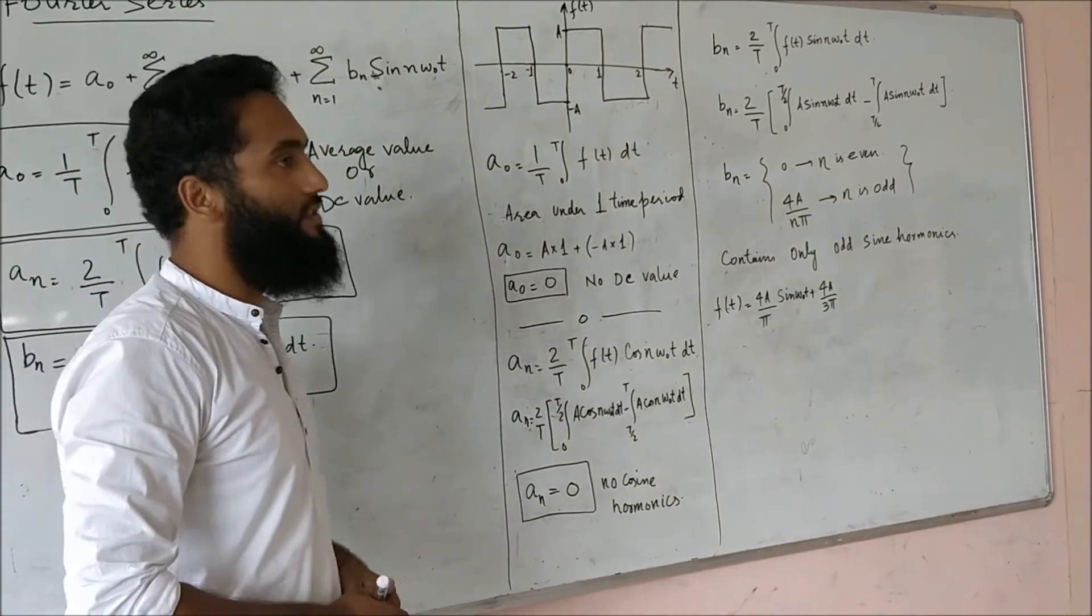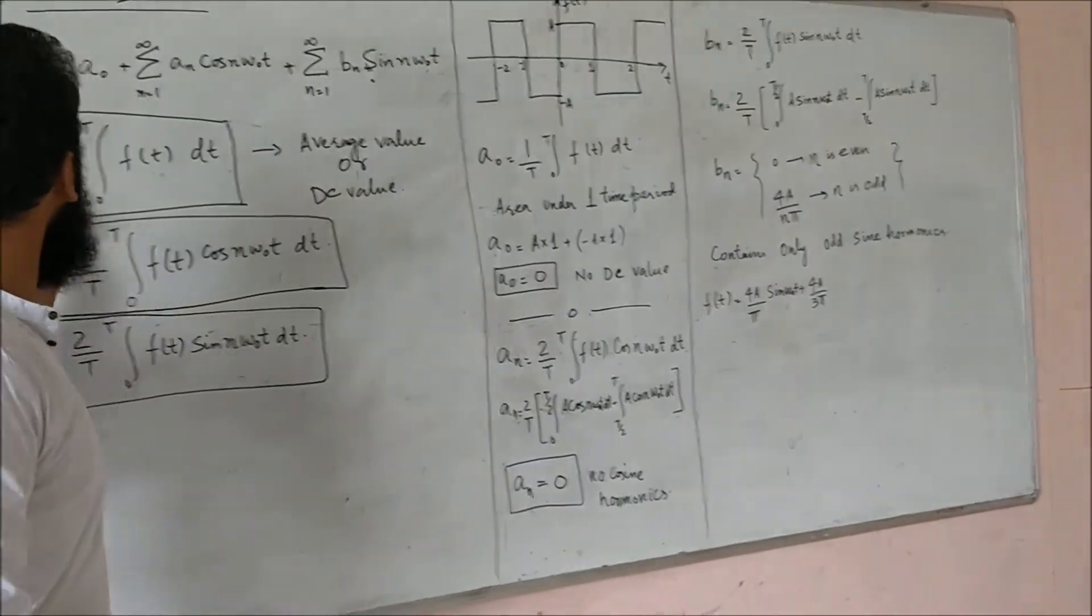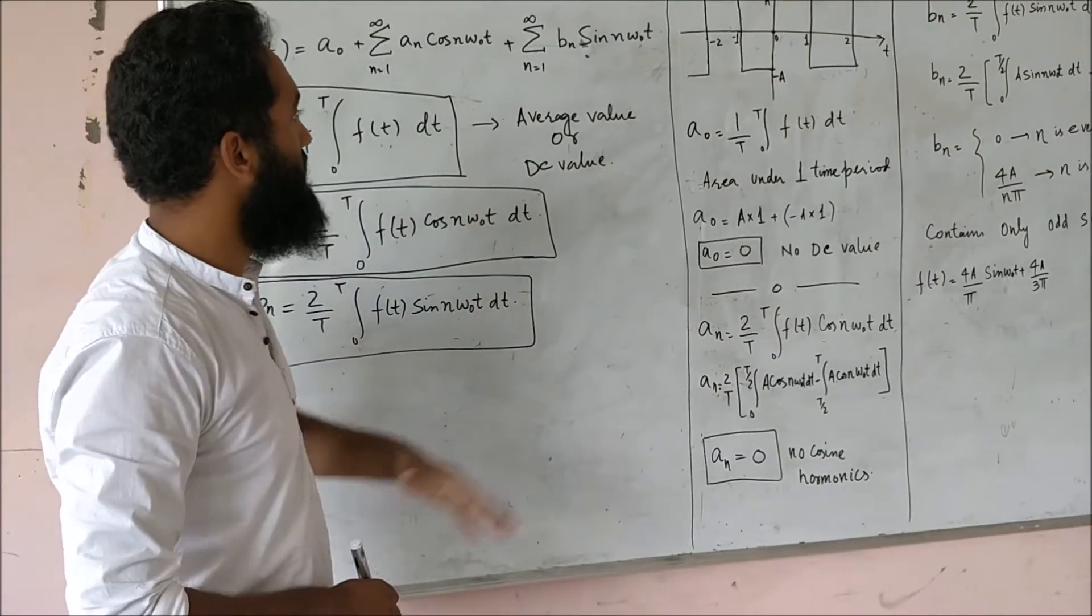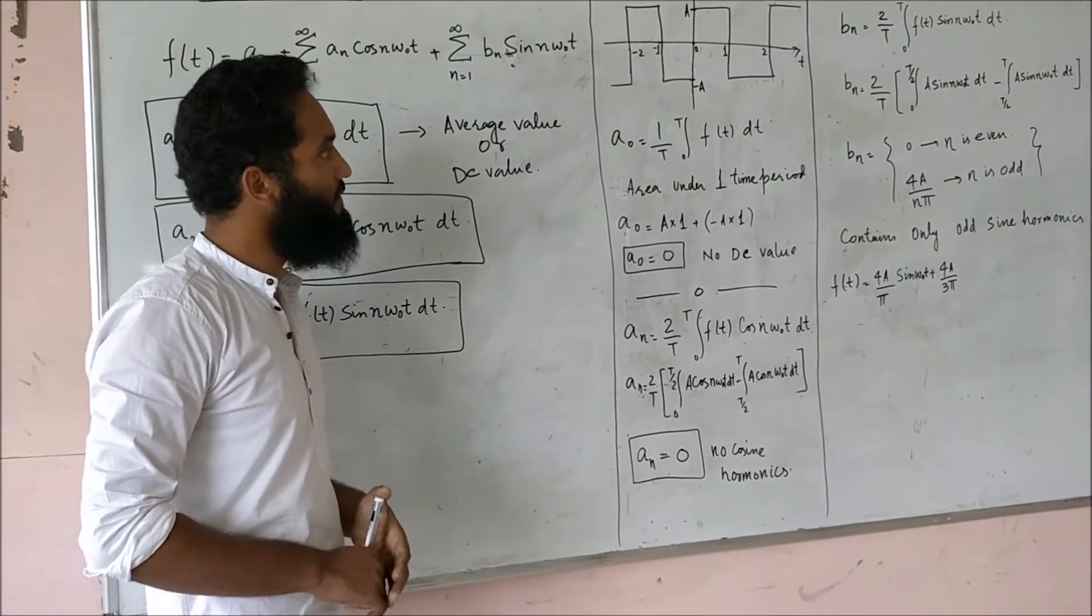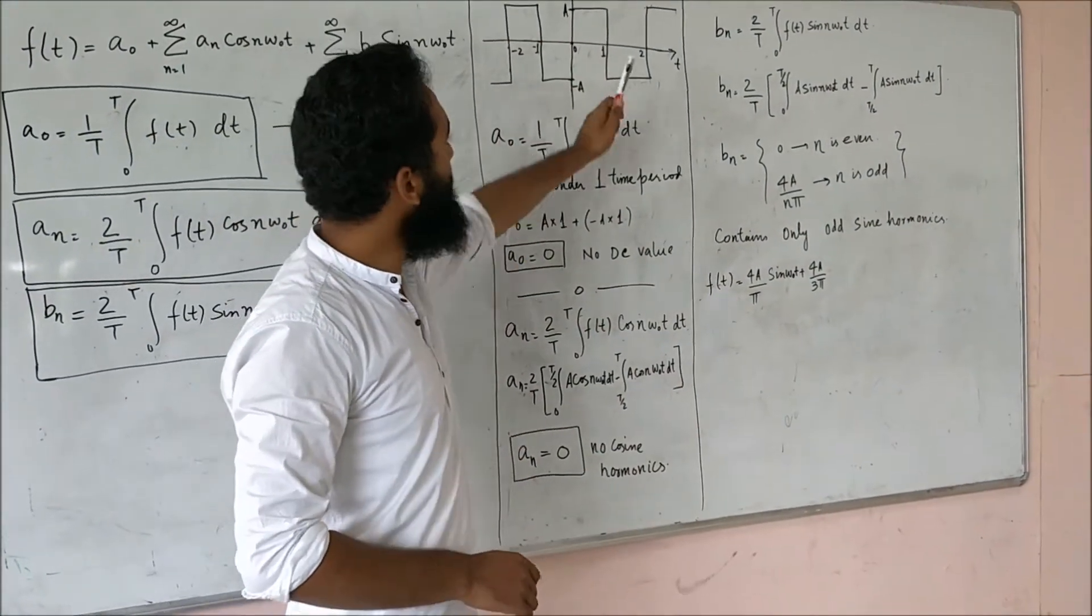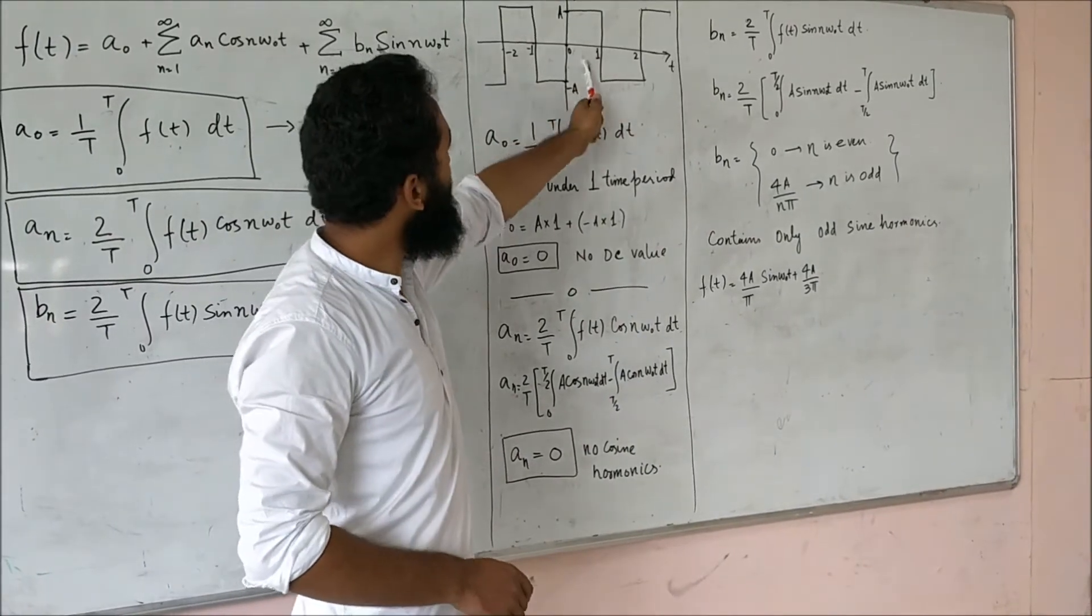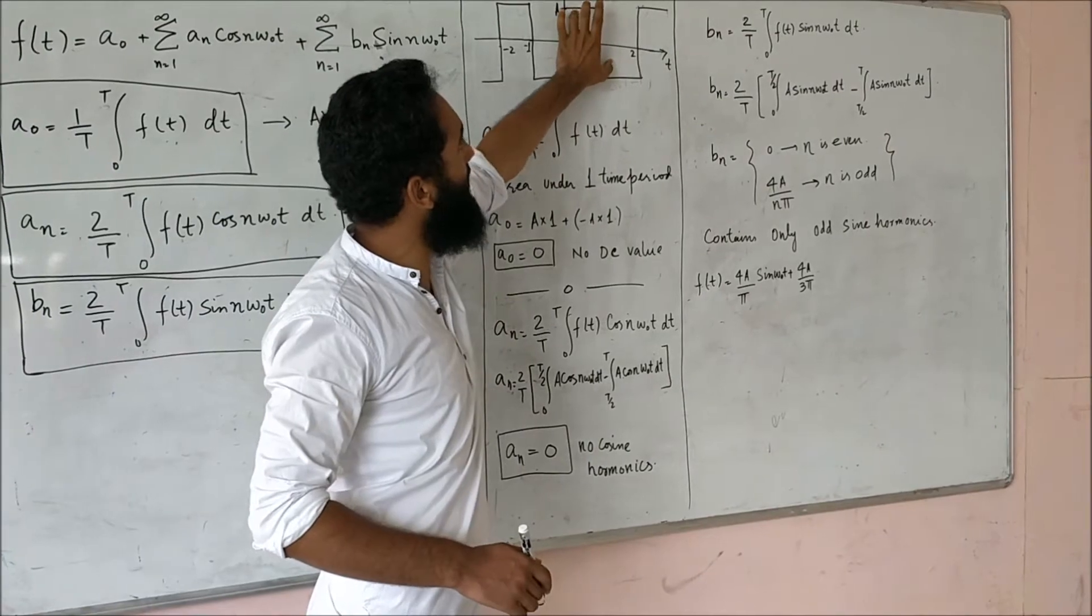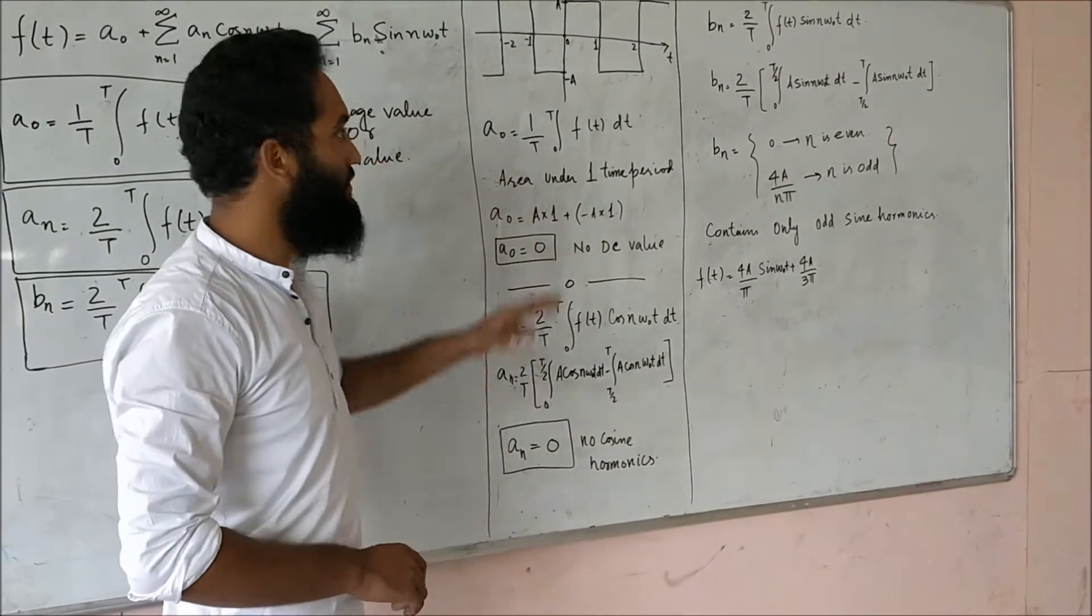Let us start with the DC term. As I earlier said, the DC term will be equal to 1 by T, 0 to T, f(t) dt which is the average value or DC value. Average value is the total area under one period of a signal. This is one period of a signal and this is the total area under this signal during one period.